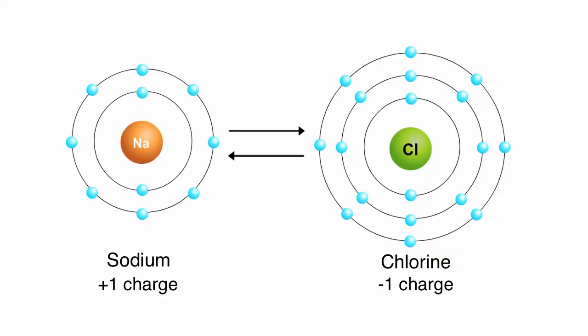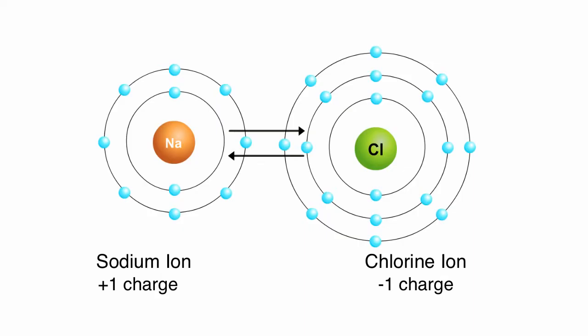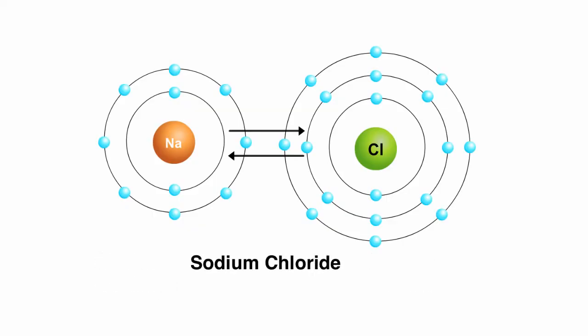The charged sodium and chlorine atoms are called ions. Ions of opposite charge attract each other and form ionic bonds. In this case, the attraction of sodium and chlorine form a molecule called sodium chloride, or table salt. This is also known as an ionic bond.